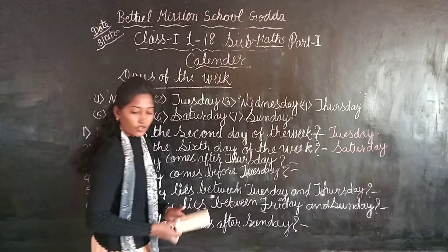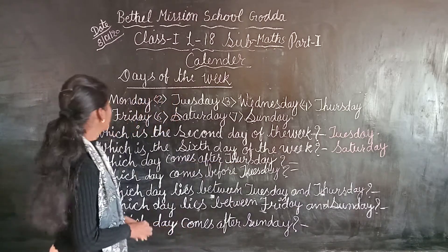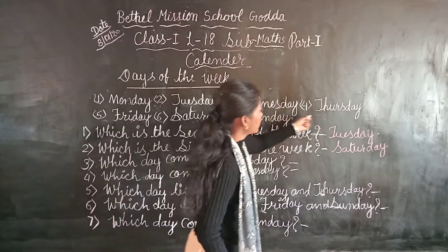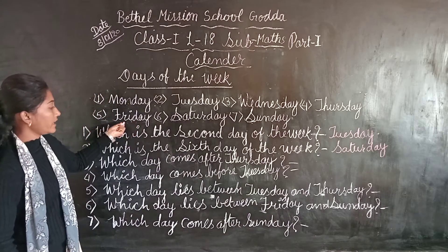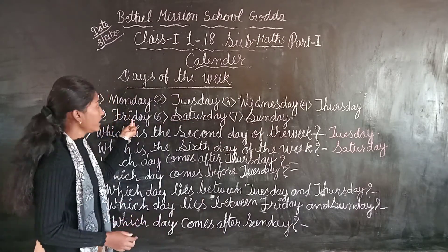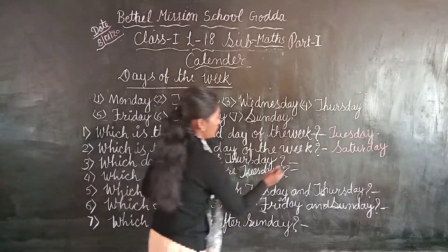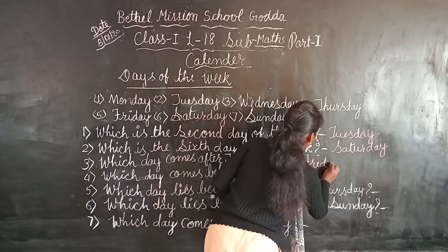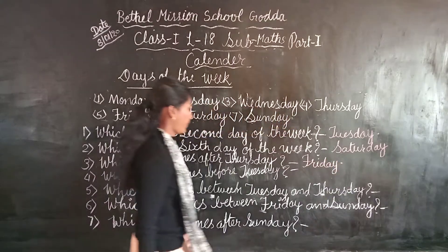Thursday. Friday comes after Thursday. First Monday, Tuesday, Wednesday, Thursday — after is Friday. So Friday comes after Thursday. We will write here Friday.